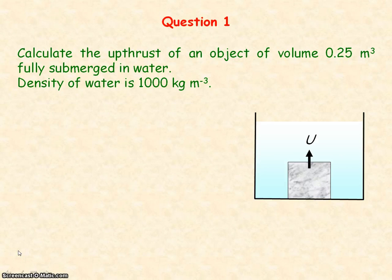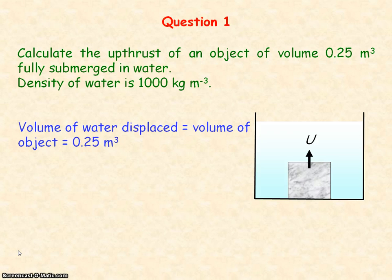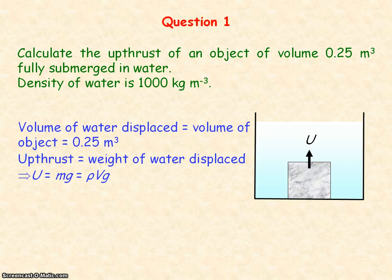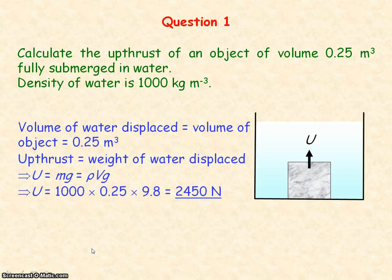As the object is fully submerged, the volume of the water displaced by the object is equal to the volume of the object. From Archimedes principle, upthrust equals the weight of the water displaced, where weight equals mg, and the mass is equal to the density times the volume of the water displaced. Substituting in the values for density, volume, and g, we get an upthrust of 2450 newtons.